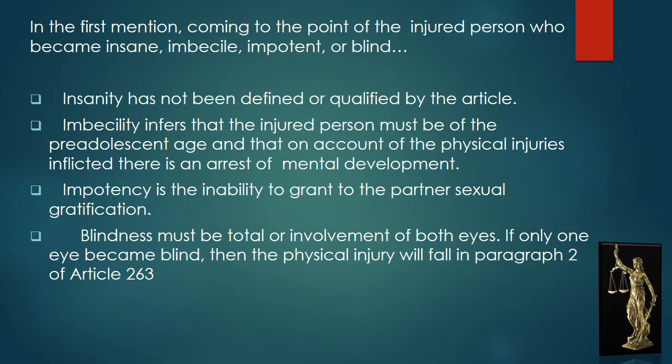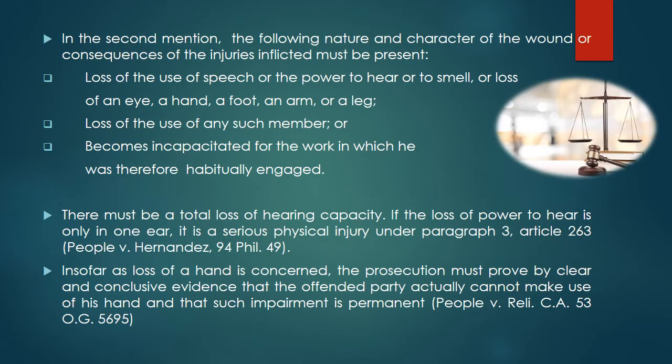Impotency is the inability to grant the partner sexual gratification. Blindness must be total or involve both eyes. If only one eye became blind, the physical injury will fall in paragraph 2 of Article 263. In the second mention, the following nature and characteristics of the wound or consequences of the injuries inflicted must be present: first, loss of the use of speech or the power to hear or to smell, or loss of an eye, a hand, a foot, an arm, or a leg; second, loss of the use of any such member or becoming incapacitated for the work in which he was habitually engaged.